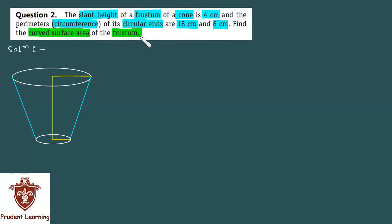In this question we are given a frustum of a cone having slant height L as 4 cm, circumference of its circular ends are 18 cm and 6 cm. So let's say circumference of its upper circular end is 18 cm and that of lower circular end is 6 cm, and let us assume radius of its upper circular end as R1 and that of lower circular end as R2. With this information we are required to find the curved surface area of this frustum.